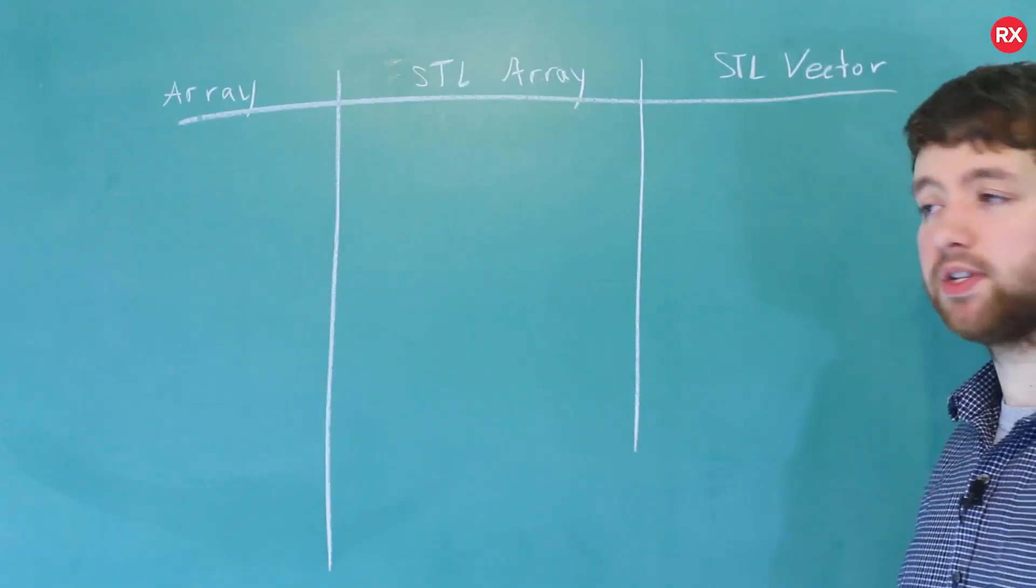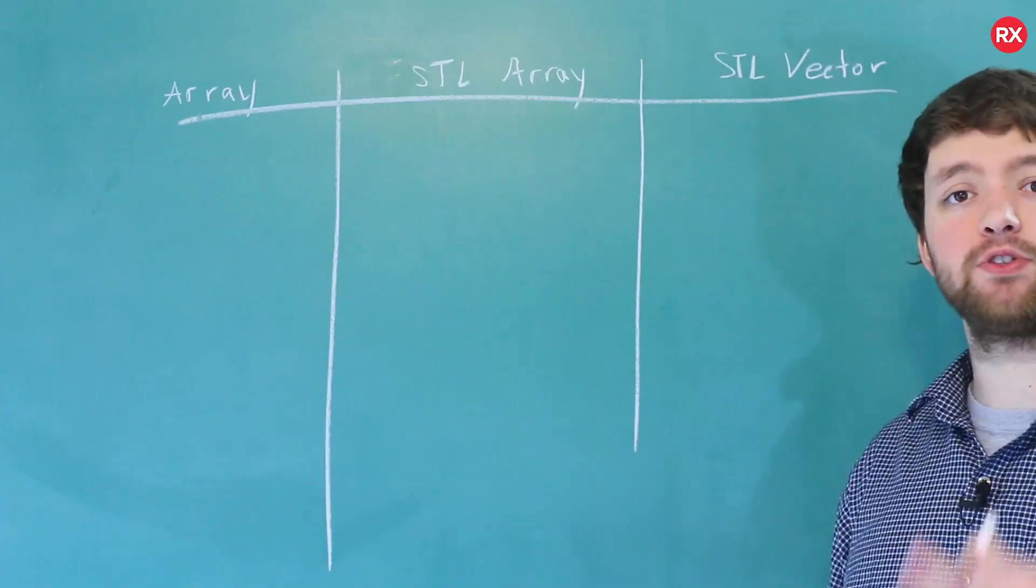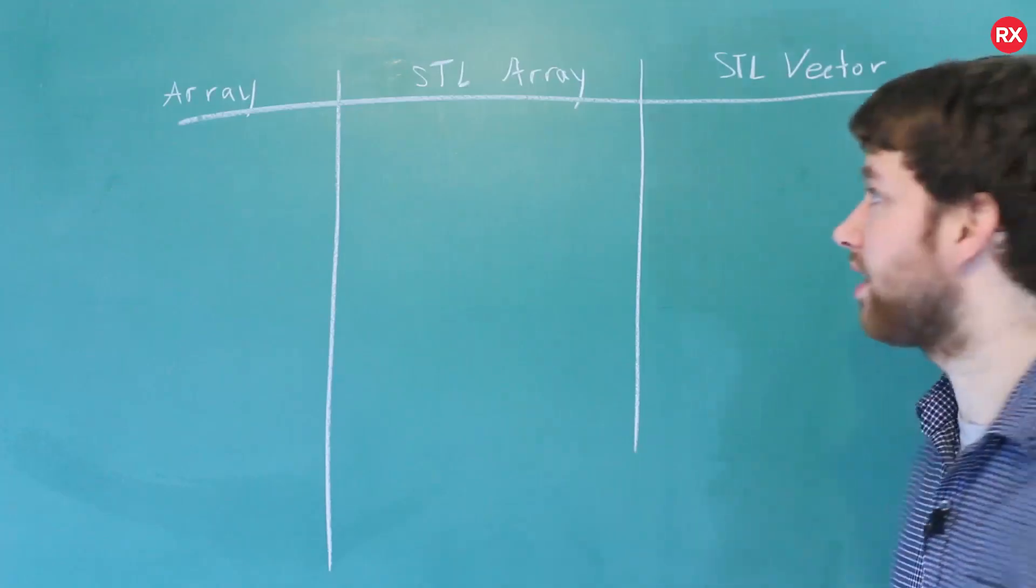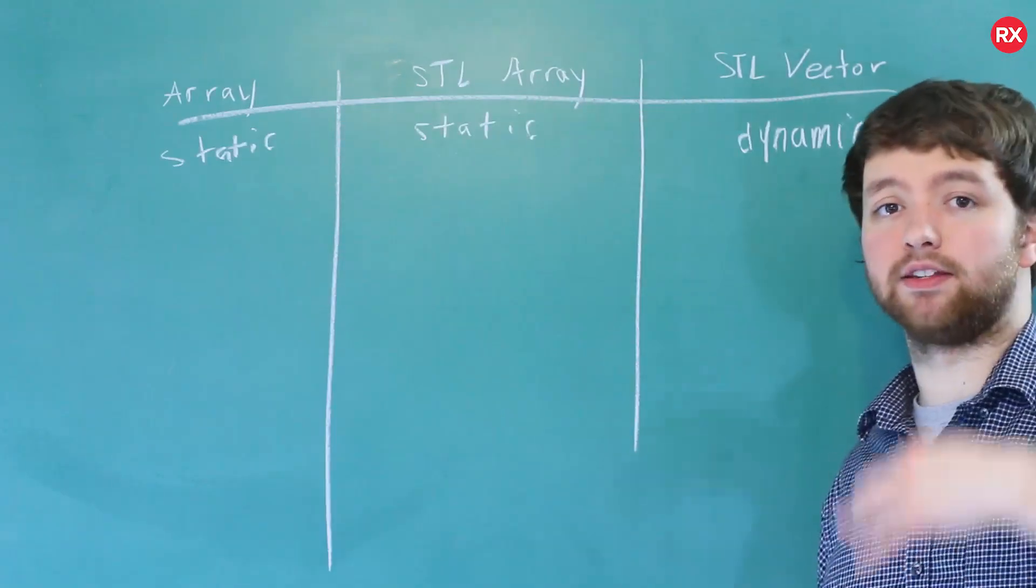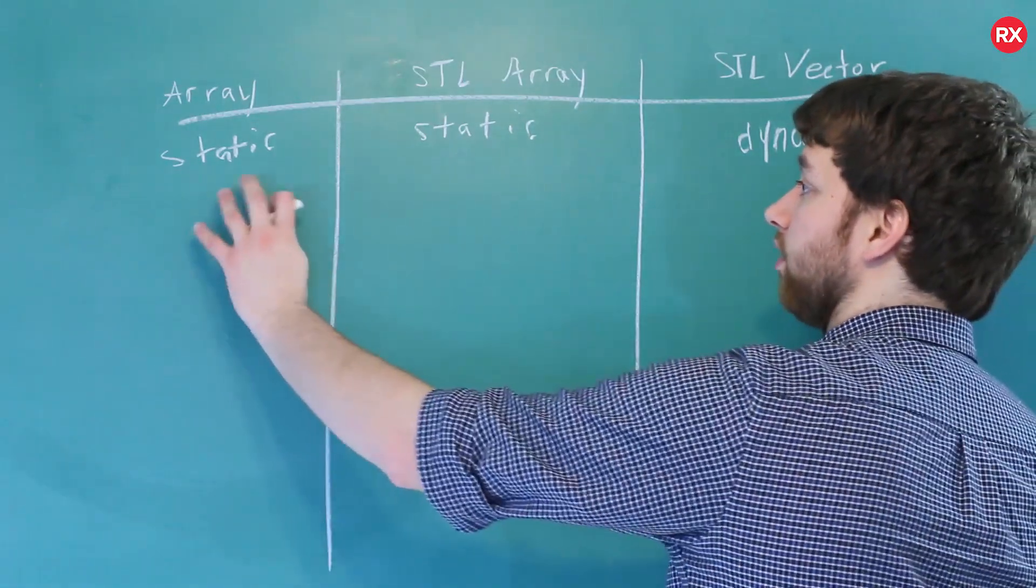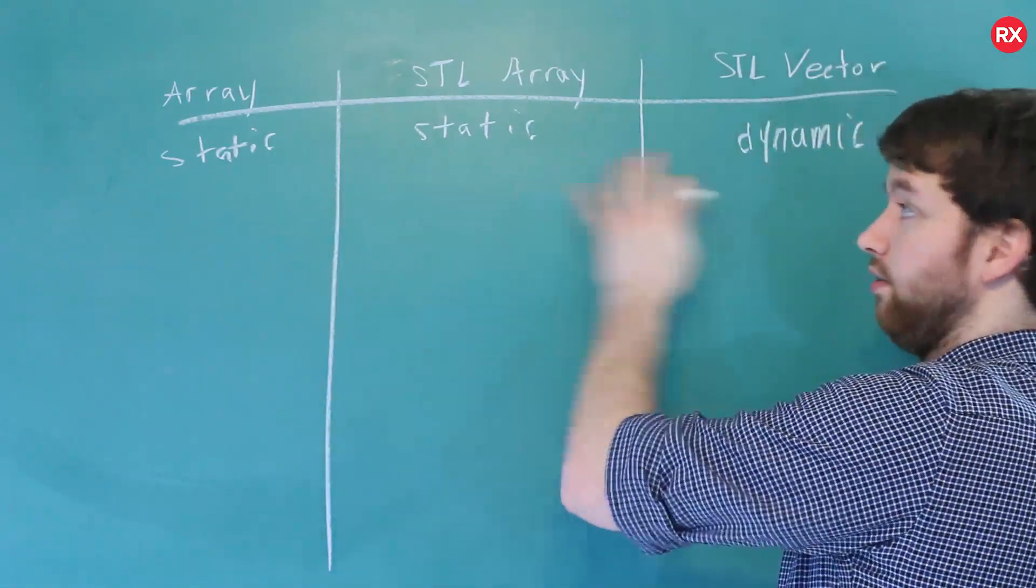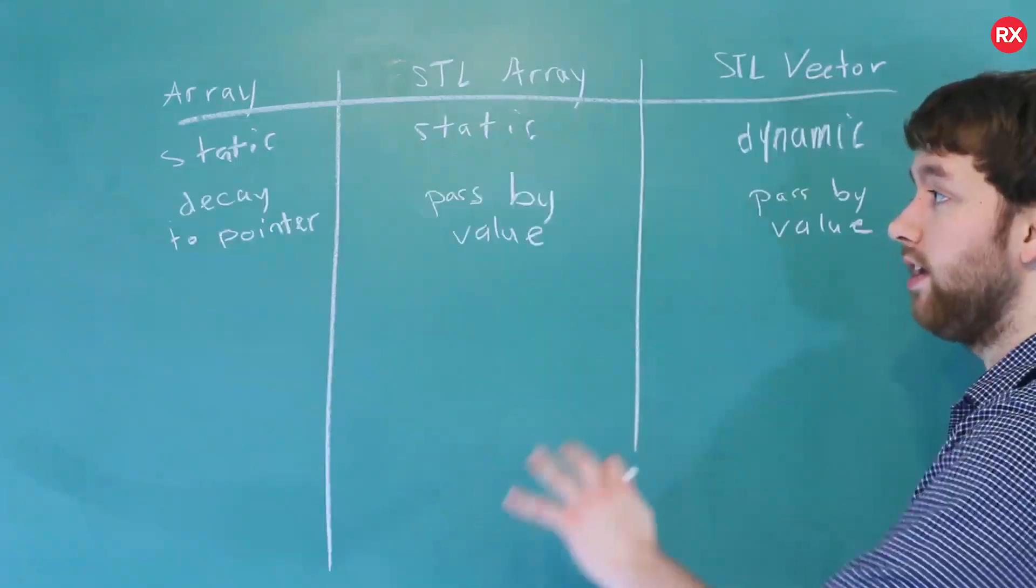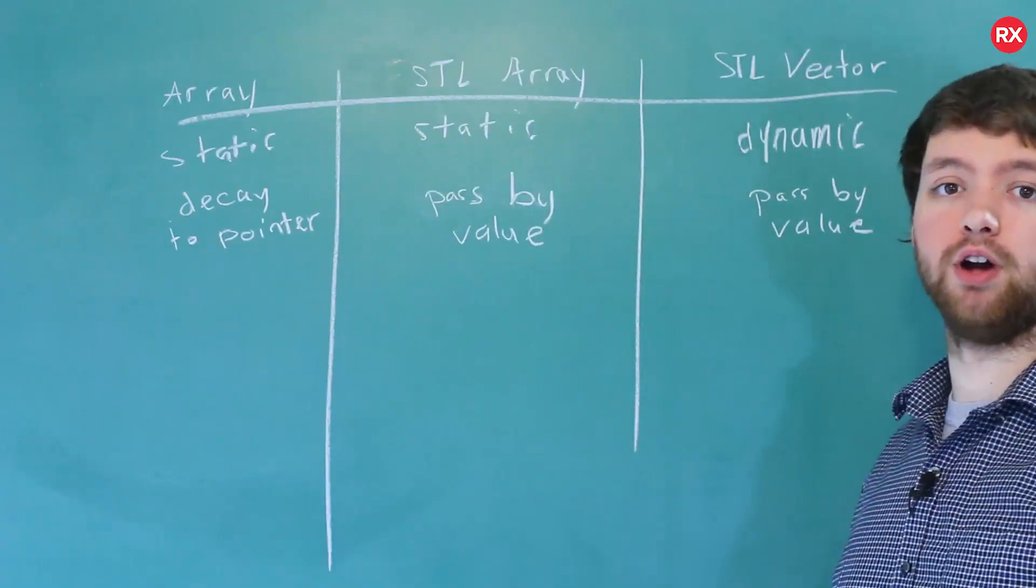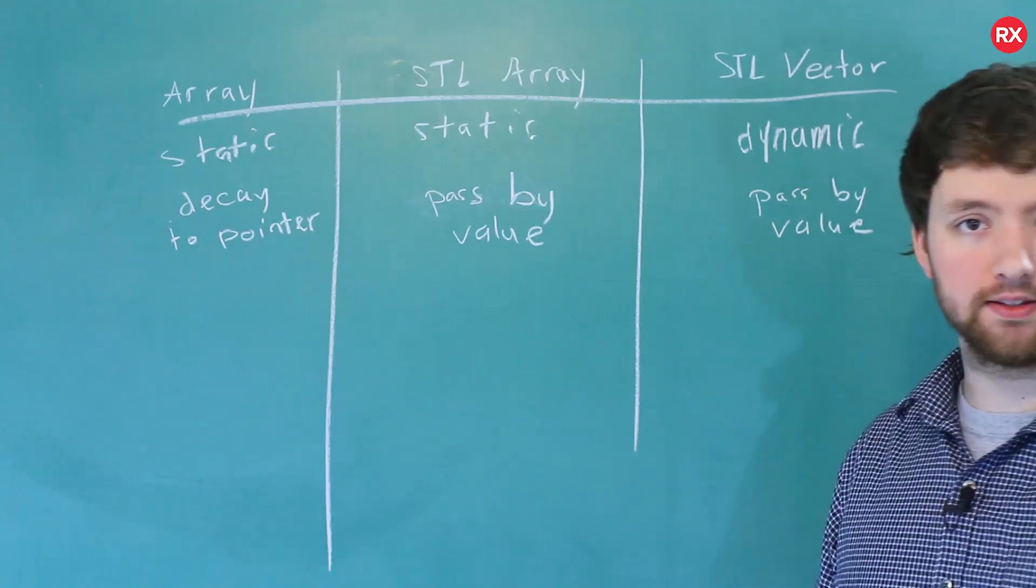All right. So here are the three types. Now let's distinguish. When it comes to static sizing versus dynamic sizing, we have static, static, dynamic. Now, when it comes to passing these to functions, we have decaying to a pointer, value, value by default. You can do these by reference if you want. Related to how these things are passed is whether or not these types know their size.